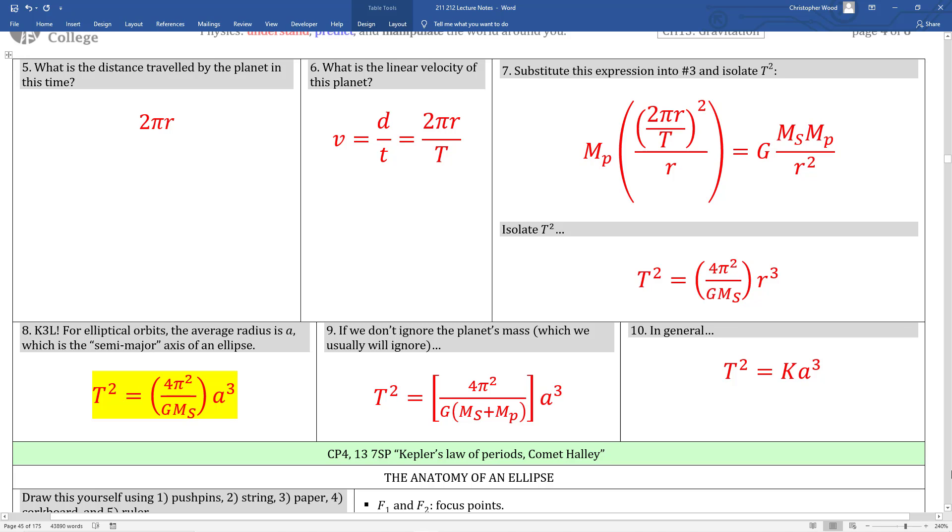This is the form we'll most commonly use in this class. Box number nine accounts for planet mass, something we typically ignore. Once again, this derivation really does a great job reinforcing Newton's law of universal gravitation and centripetal force. Kepler's laws really do represent a milestone in astronomy.